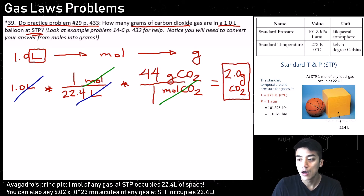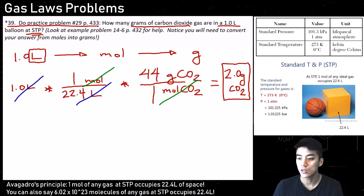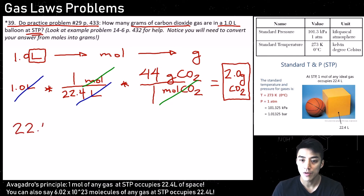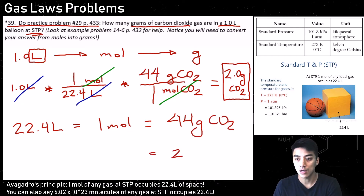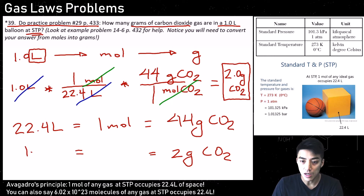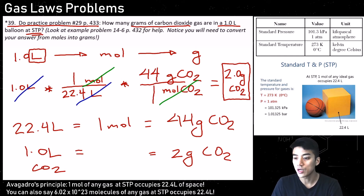Let's make sense of this answer. We know that 22.4 liters equals 1 mole of any gas, and for carbon dioxide that mass is 44 grams. We got 2 grams of CO2 starting from 1 liter, which makes sense because we had less than 1 mole of carbon dioxide gas — so the proportions all check out.